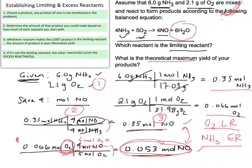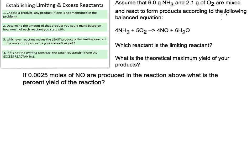Your excess reactant is the one that is left over or abundantly present, so it does not get used up. Making sure you figure out your limiting reactant is the first thing you must do before any yield calculations or amount calculations, especially when you're given multiple reactants. In the previous problem, we established our limiting reactant and figured out the theoretical maximum of NO: 0.053 moles.